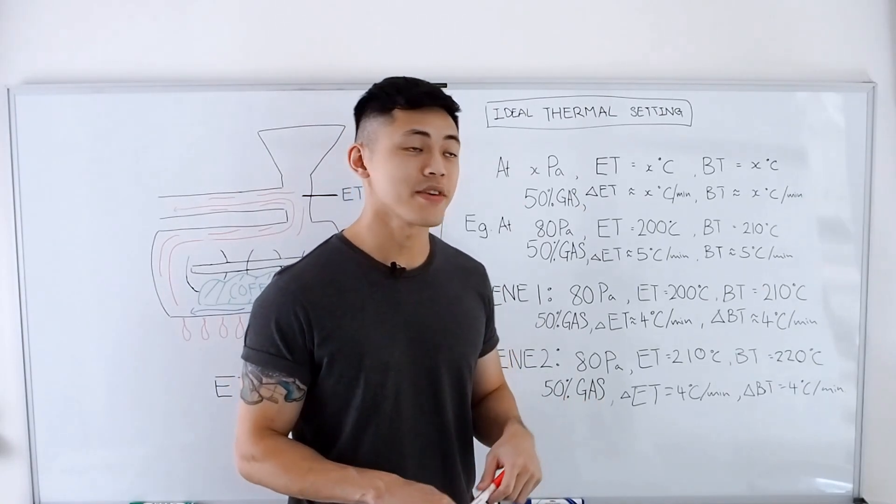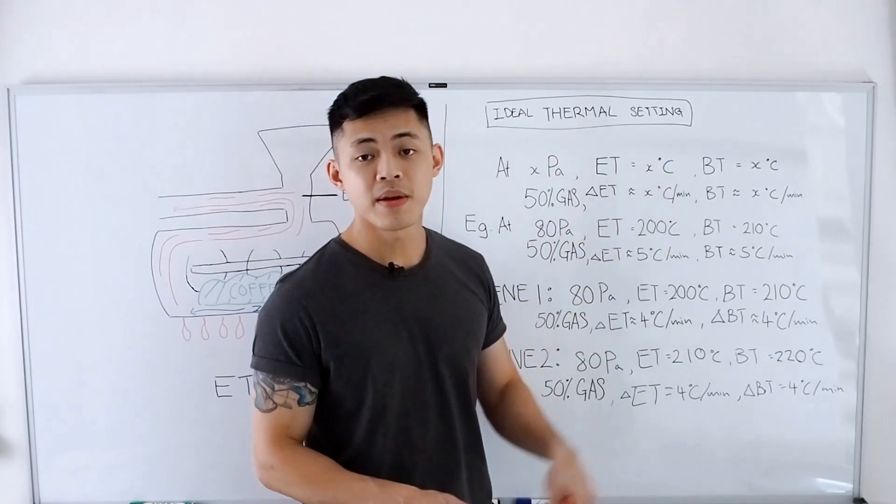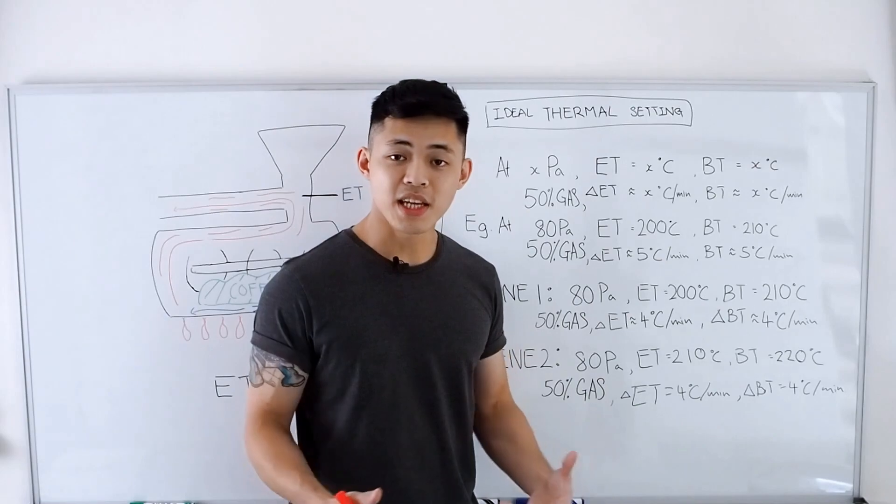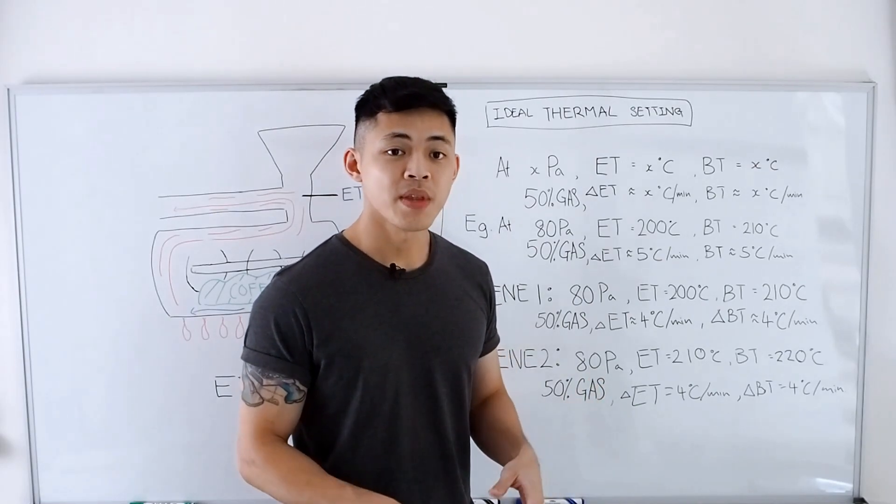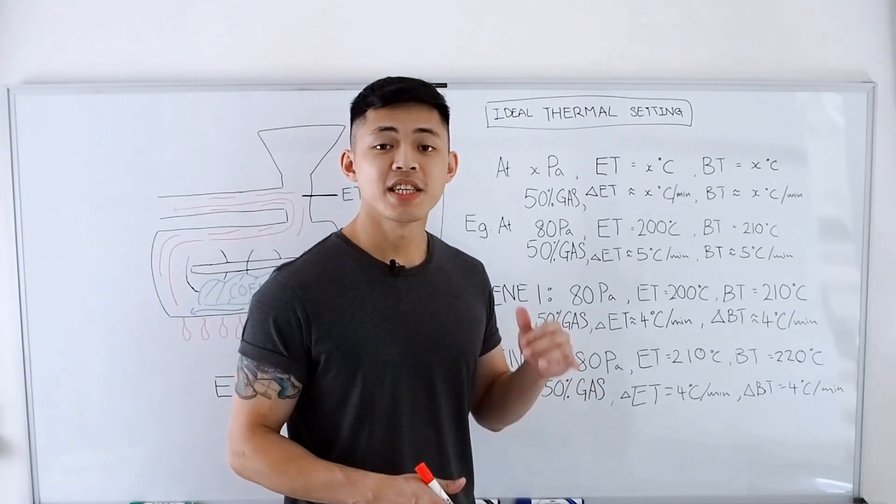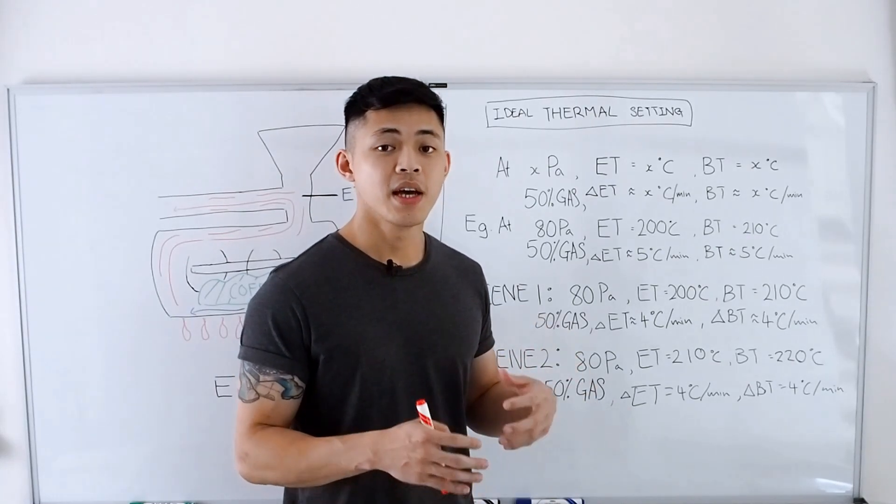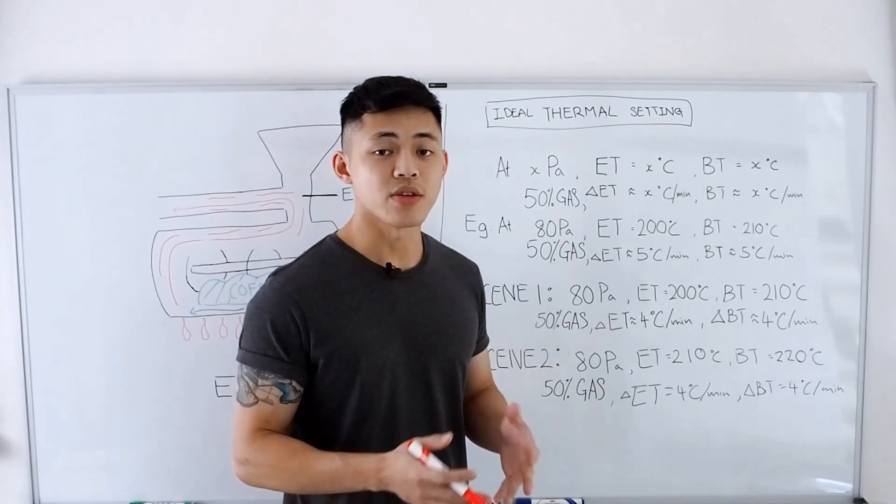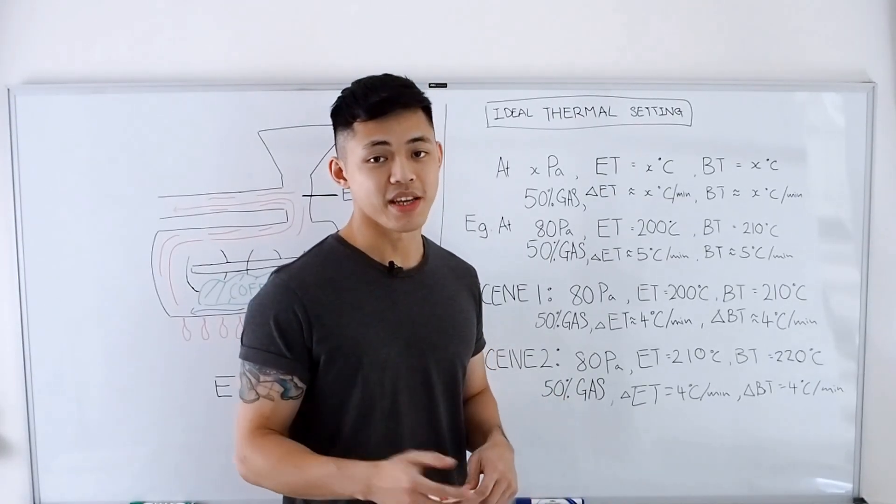Now a good starting point for figuring out your ideal thermal setting is running a test batch through your roasting machine, and at the end of the batch, after you have released the coffee, you can measure six variables to identify the minimum thermal settings that you have to have before you begin roasting.